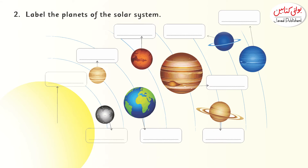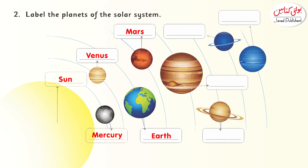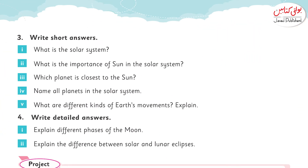Now label the planets of the solar system. If you look at the beginning of this chapter, the solar system diagram is clearly shown on page number 80. You can complete it from the sun: number one is Sun, second is Mercury, third is Venus, fourth is Earth, fifth is Mars, sixth is Jupiter, seventh is Saturn, eighth is Uranus, and then Neptune.